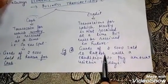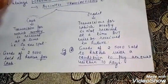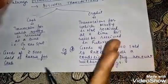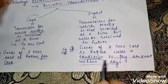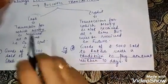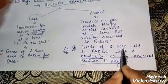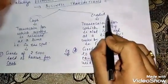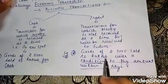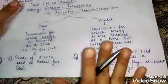Example of a credit transaction: 'Goods worth 5,000 sold to Rakesh, with a condition to pay the amount within 10 days.' We have sold the goods but the payment condition is that Rakesh will pay within 10 days. This was the basic difference between a cash transaction and a credit transaction.